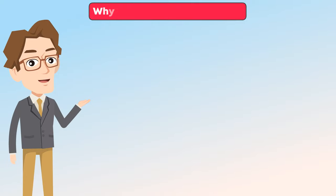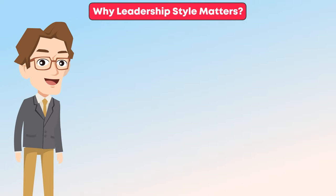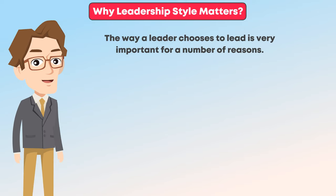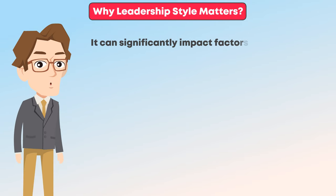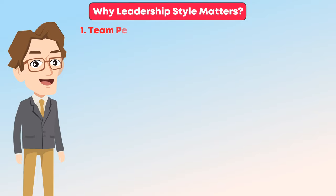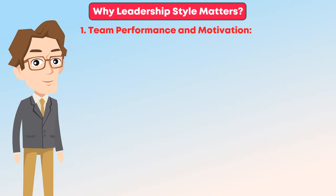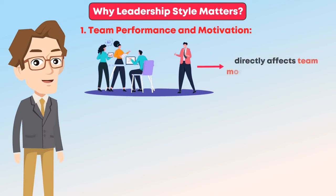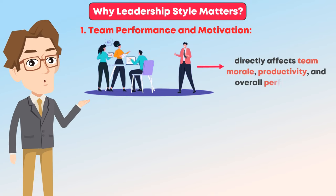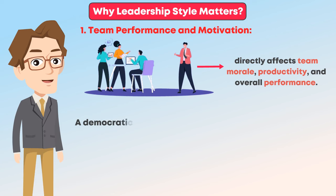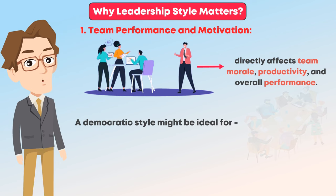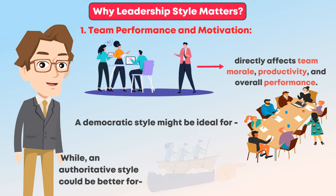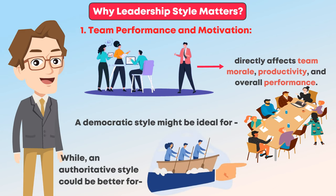Now let's discuss why leadership style matters. The way a leader chooses to lead is very important for a number of reasons. It can significantly impact factors like: one, team performance and motivation. The way a leader interacts with and motivates their team directly affects team morale, productivity, and overall performance. A democratic style might be ideal for fostering collaboration on a complex project, while an authoritative style could be better for providing clear direction in a fast-paced environment.